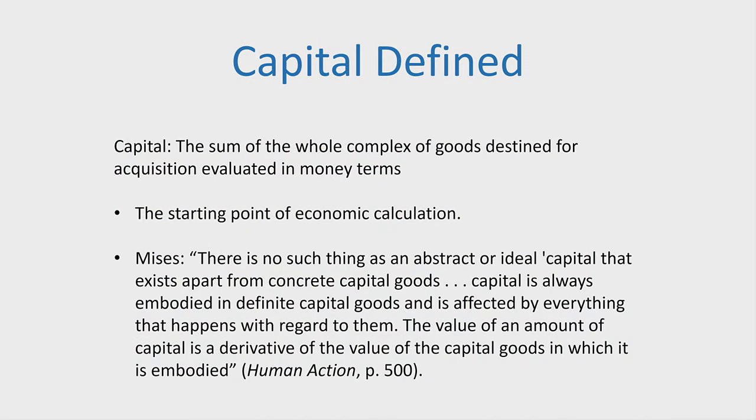Or is it a set of homogeneous non-human factors of production we represent with K? The answer is none of those completely get it quite right by themselves. What Mises says is that capital — he defines it very succinctly in Human Action — is the sum of the whole complex of goods destined for acquisition evaluated in money terms. That is what capital is.